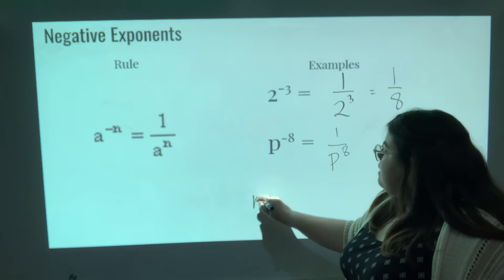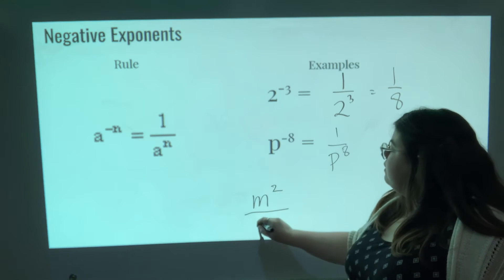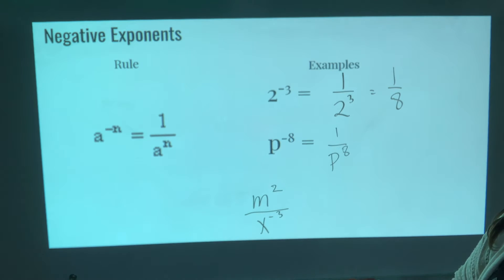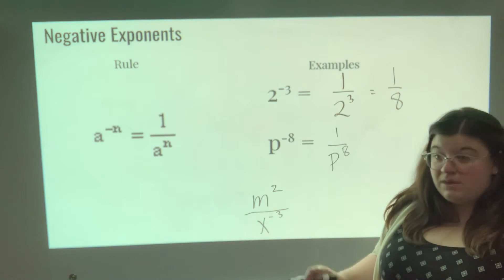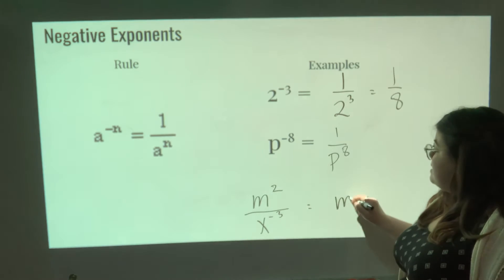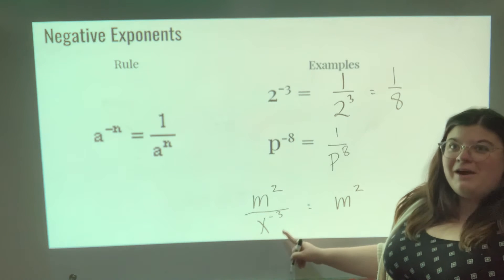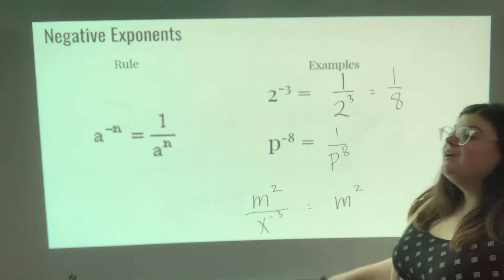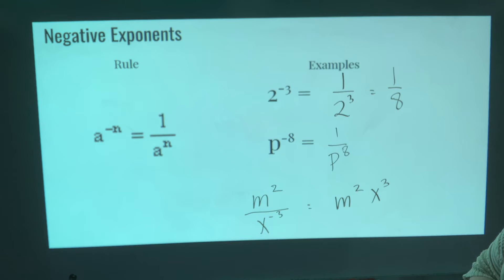What if you had M squared over X to the negative 3rd power? Okay, the M squared is happy—it's a positive exponent. You don't need to do anything with it. So it's going to stay in the numerator. But the X to the negative 3rd power, or X to the power of negative 3, is not happy. It needs to flip around. So instead of being in the denominator, it's going to flip up to the numerator, and you're just going to have X to the 3rd power. Pause if you need to. I like that last example.